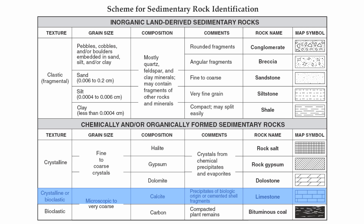Limestone is a unique rock because it can either be made through the precipitation of water, or through cemented shell fragments, which leads to our next category: bioclastic rocks. Limestone and bituminous coal are the two rocks made from either dead plant remains or dead animal remains. It's a very easy chart to read — really look at the comment section because that'll give you a lot of information. Thanks so much, we'll talk to you soon.